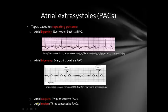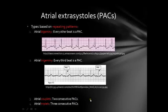Atrial triplets means three consecutive premature atrial contractions: normal beat, three extrasystoles, normal beat, three extrasystoles. I apologize for not putting an ECG example here because I couldn't find a good example on the internet.